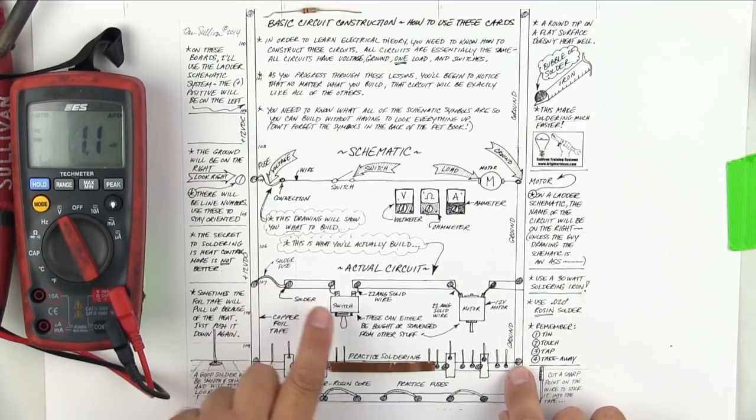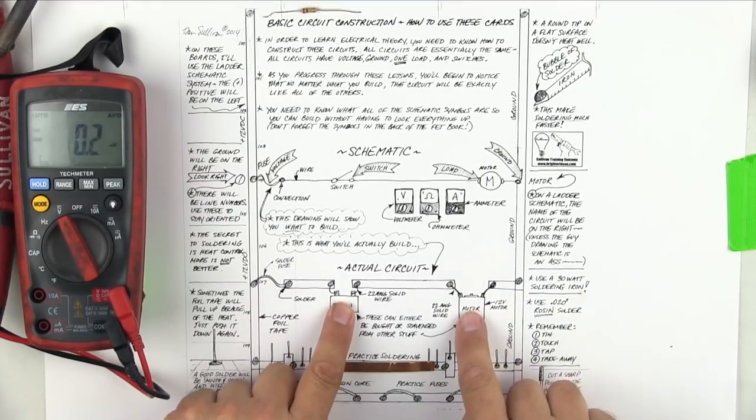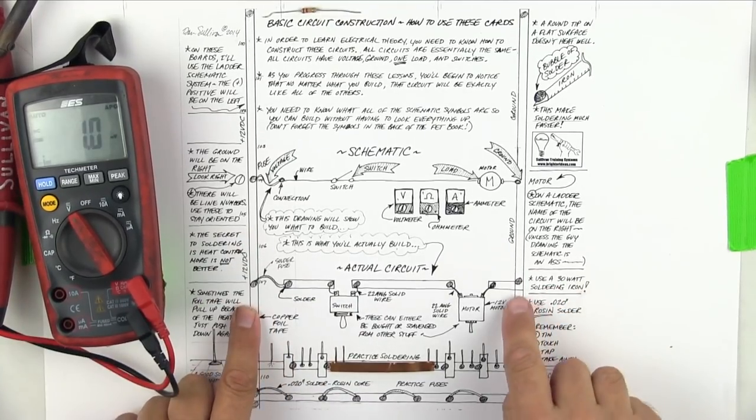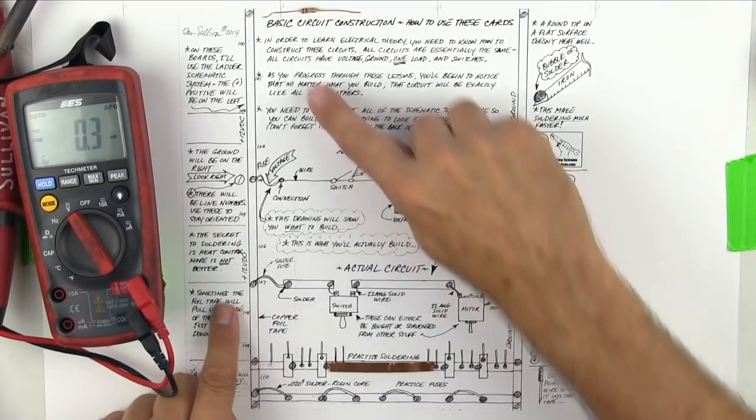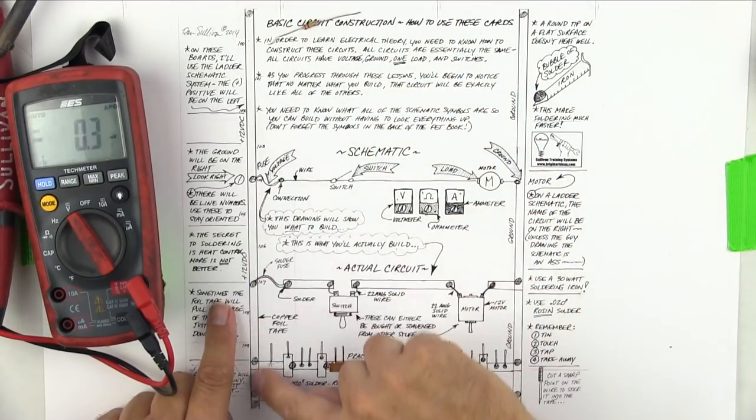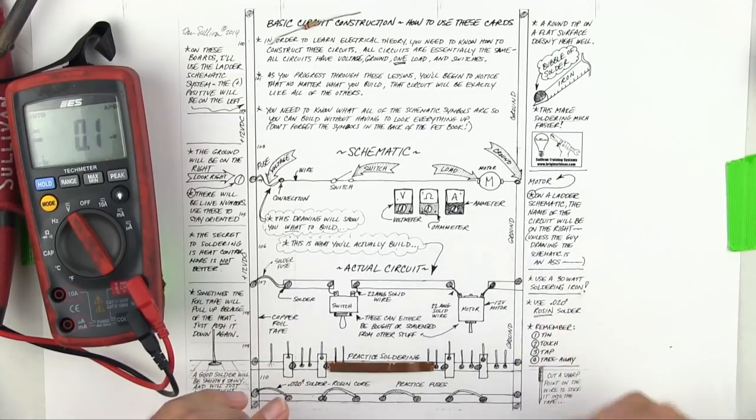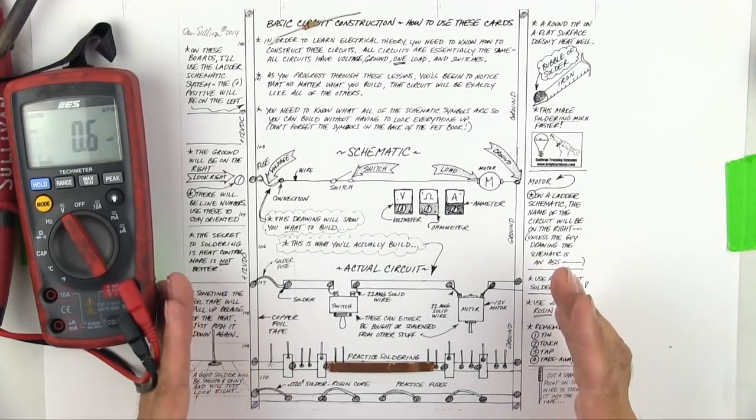You'll create a fuse here, you'll put a switch in here, you'll put a motor in here, but you have to have the fuse connected to the positive bus and you have to have the ground connected. So the positive will be here on the left, the ground will be on the right, and this is a ladder diagram, this is a ladder schematic.